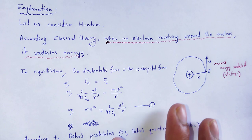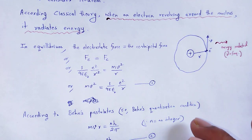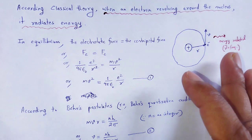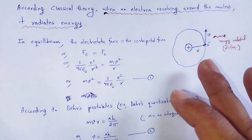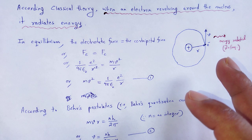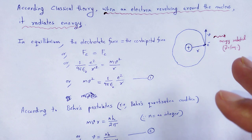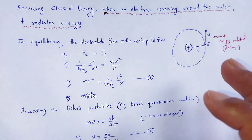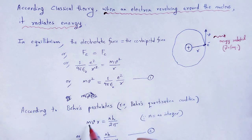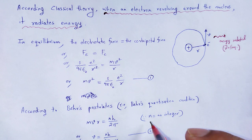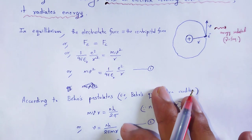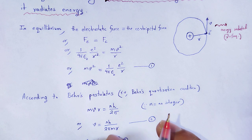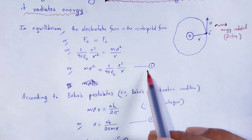According to Bohr's postulate — Bohr's quantization condition — the electron revolves around the nucleus in certain permitted orbits. Those permitted orbits are defined such that the angular momentum of the electron revolving around the nucleus is an integral multiple of h/2π. So, mvr = nh/2π, where n is an integer. Therefore, v = nh / (2πmr).